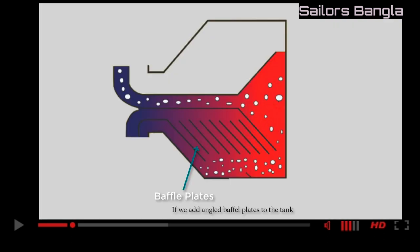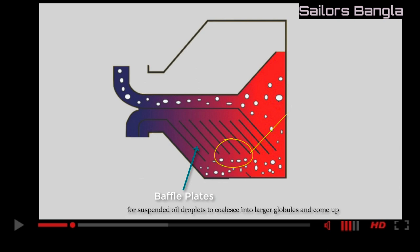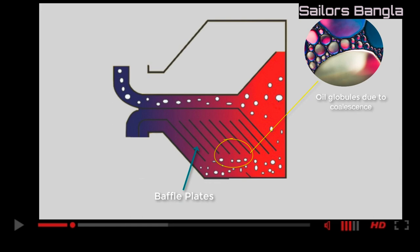If we add angled baffle plates to the tank, the underside of each parallel plate provides more surface for suspended oil droplets to combine into larger globules and come up. The solid particles will also slide down the surface of each parallel plate. This allows the denser liquid and solids to settle at the bottom, while the lighter fluid will rise up to separation.